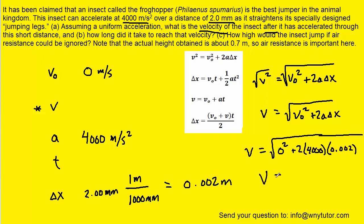And when you punch that into your calculator, you should get exactly 4.0 meters per second. So this turns out to be the final velocity of the insect. We can go ahead and actually fill that into our table as well.